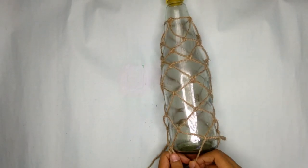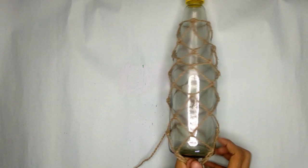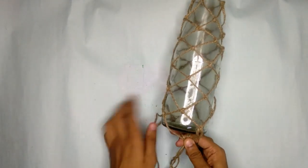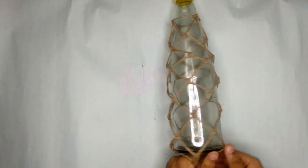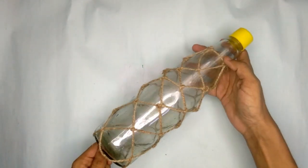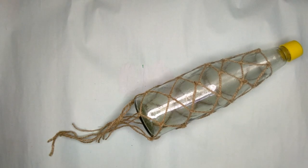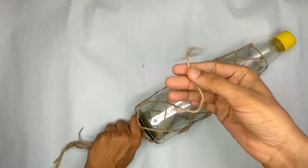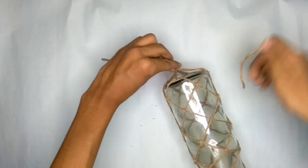And our bottle is almost ready. Just take off the excess thread and stretch it to tighten it up. Take another piece of thread and tie it at the bottom tightly.